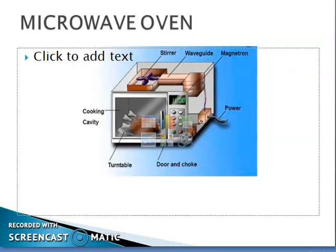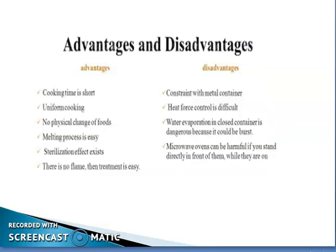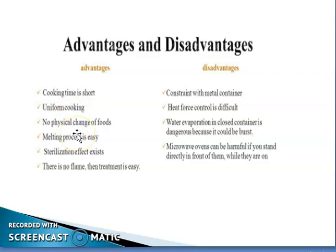There are certain advantages and disadvantages. What are the advantages? The cooking time is very short, and it always provides uniform cooking. No physical change of food occurs inside a microwave oven. The melting process is easy, a sterilization effect exists, and there is no flame, so the treatment is easy.